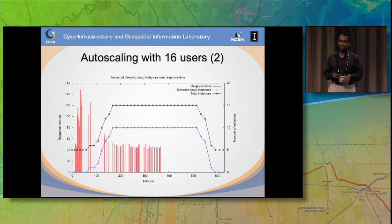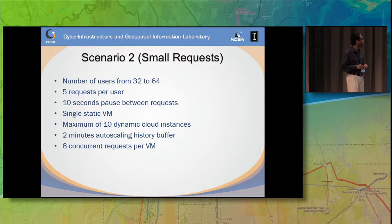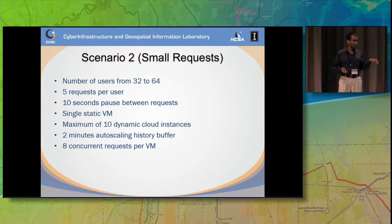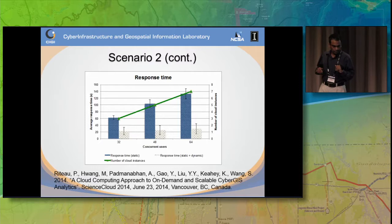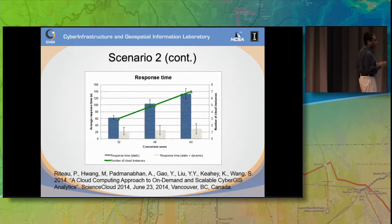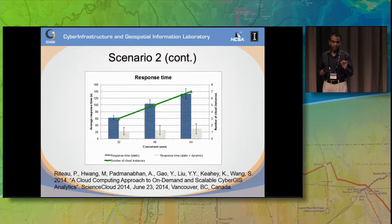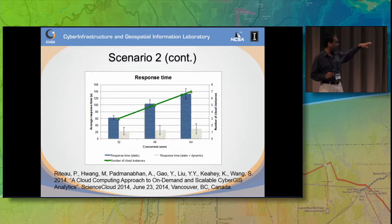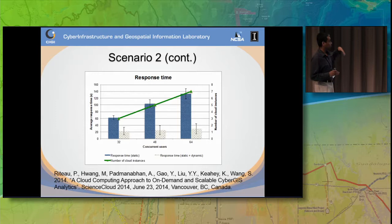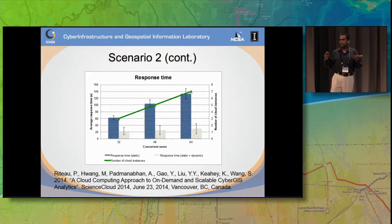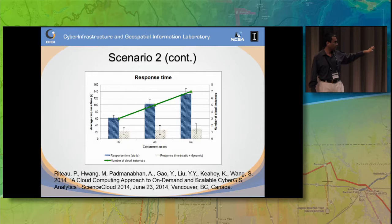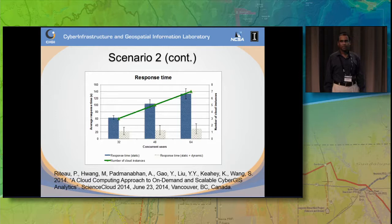In the second scenario with 32 to 64 users and five requests per user, we allowed 8 concurrent requests per VM since these were small requests. You can really see the performance effect: for 32 users, average response time is around 20 seconds for the static plus dynamic approach, while it's over 60 seconds for just the static case. For 64 users the difference is much higher. You can look at this paper — published in June at the Science Cloud Workshop — which has all the details.